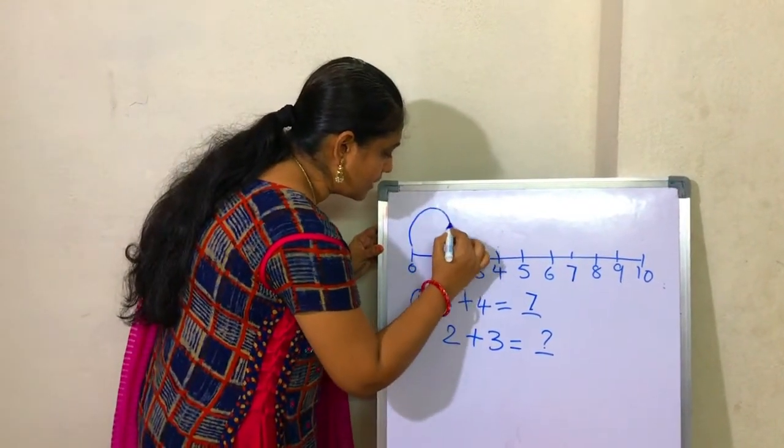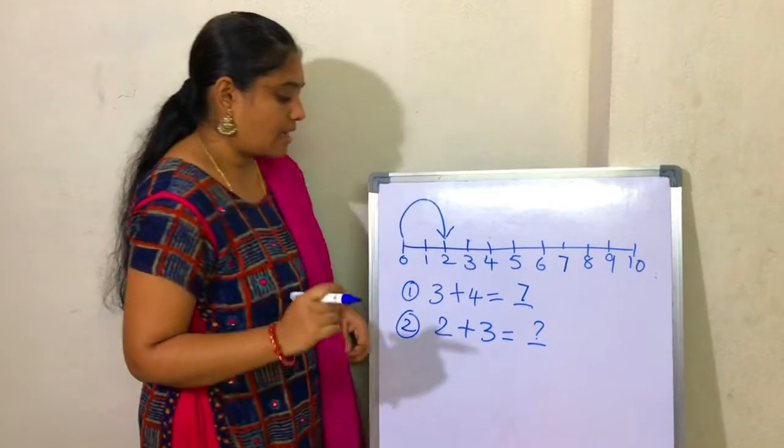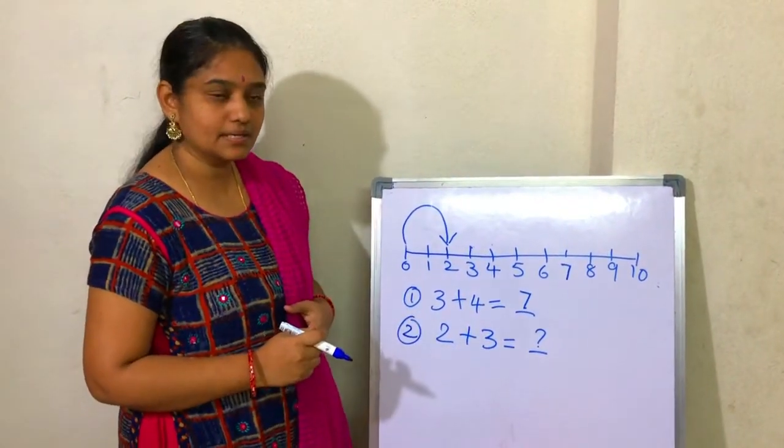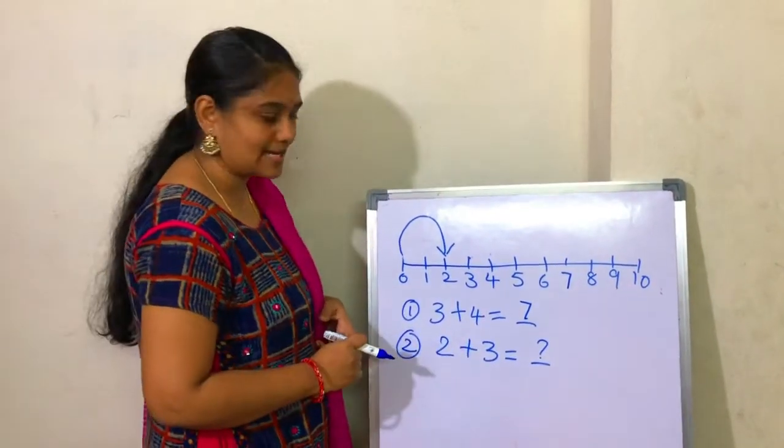We start from 2. Now, what is the next number? 3, right?